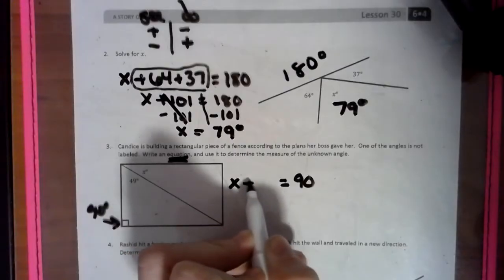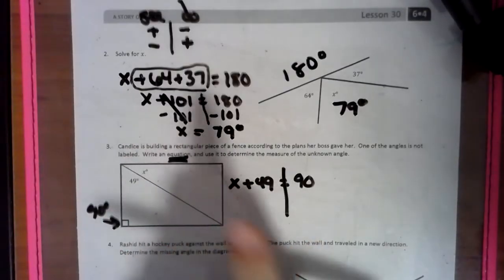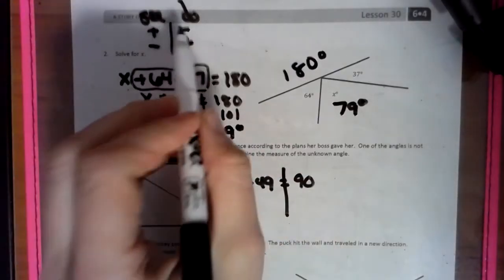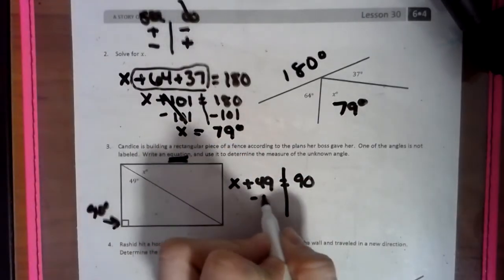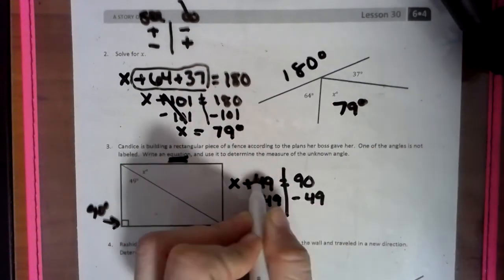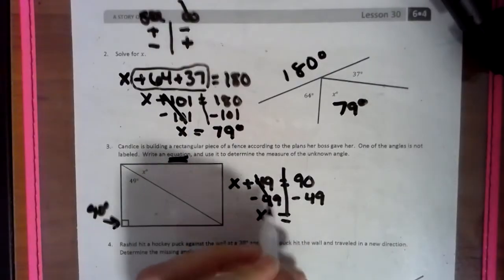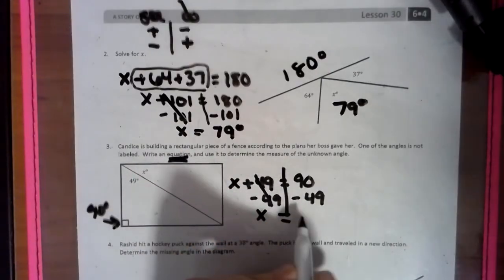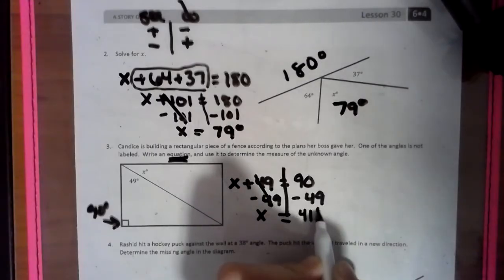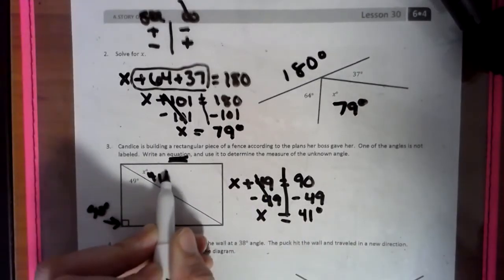We know that each angle equals 90. We have an unknown value of x plus 49. Remember, what we do to one side, we do to the other. We see addition, we do subtraction. So we're going to get rid of the 49 — it cancels out. We are left with x on this side, and if we subtract 49 from 90, we will get 41 degrees. So our missing piece is 41 degrees.